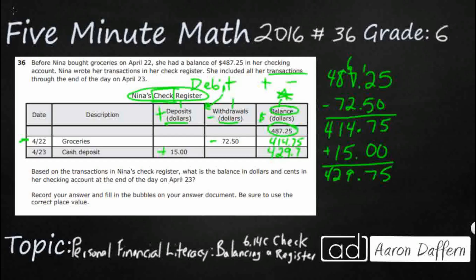And that's it. That's what they're asking for — the balance at the end of April 23rd. So the answer is $429.75. There is no A, B, C, or D to choose from, so we would just bubble this into the answer document: $429.75.